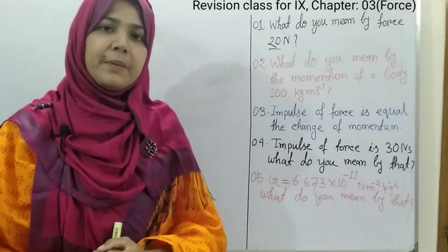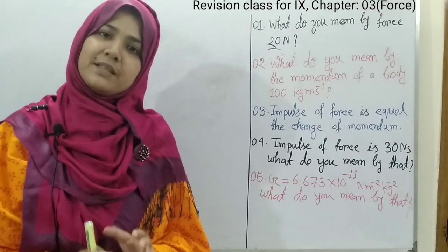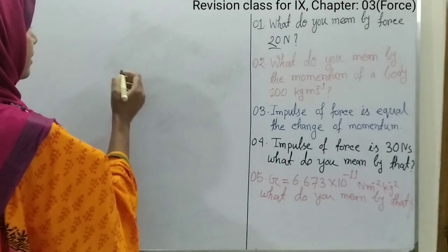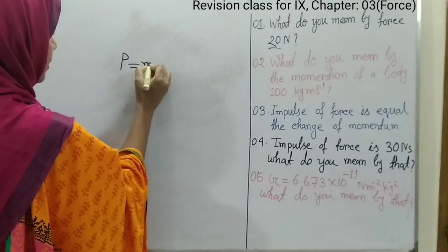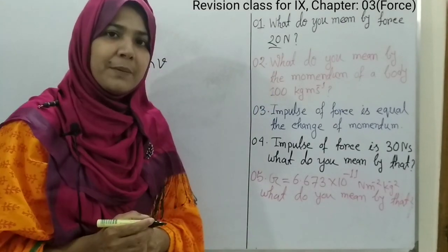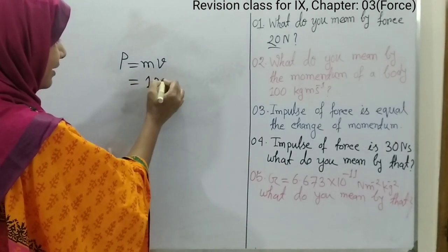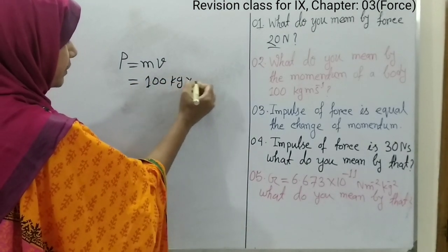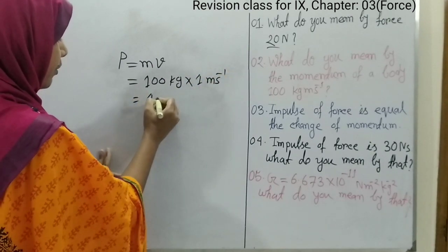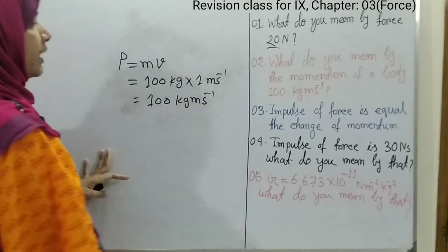Our second question: what do you mean by the momentum of a body 100 kg meter per second? Momentum means the product of mass and velocity. Momentum is denoted by P, so P equals MV. So momentum 100 kg meter per second means an object of 100 kg moving with 1 meter per second velocity — that is called momentum 100 kg meter per second.